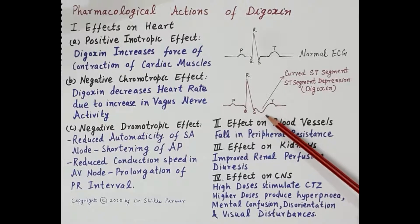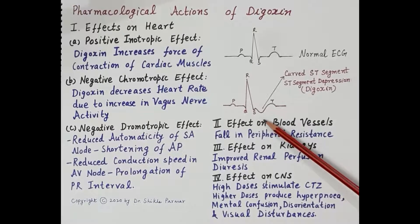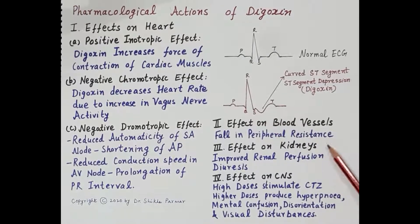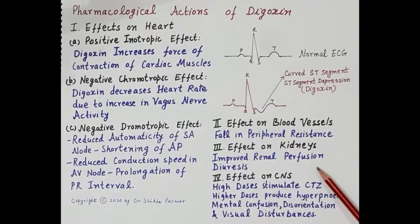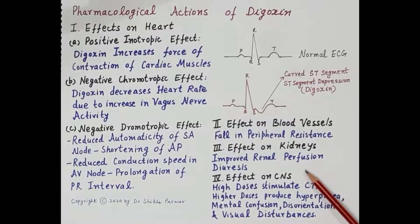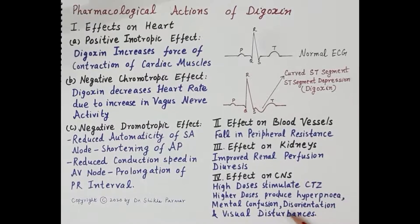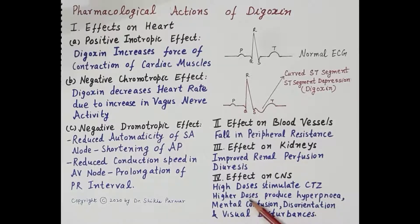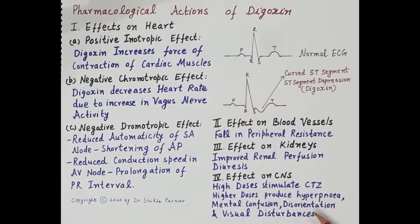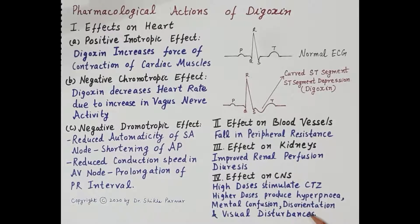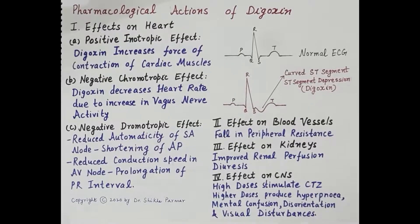Digoxin causes shortening of the action potential, prolongation of the PR interval, and a characteristic depression and curving of the ST segment. These ECG changes reflect digoxin's pro-arrhythmic potential, which limits its use in CHF management. Regarding blood vessels, improved cardiac output causes a fall in peripheral resistance. Improved renal perfusion causes diuresis, reducing pulmonary congestion and systemic edema. High doses stimulate the chemoreceptor trigger zone, causing nausea and vomiting; still higher doses produce hyperpnea, mental confusion, disorientation, and visual disturbances including color vision changes.